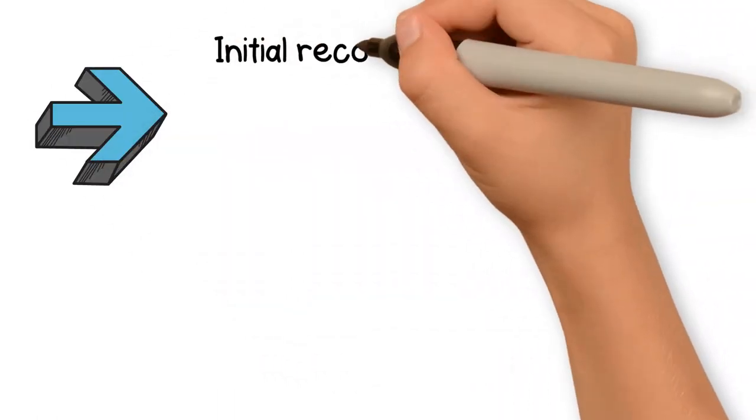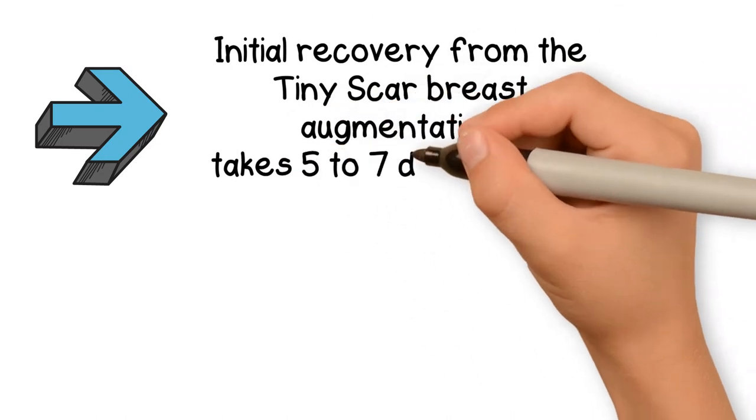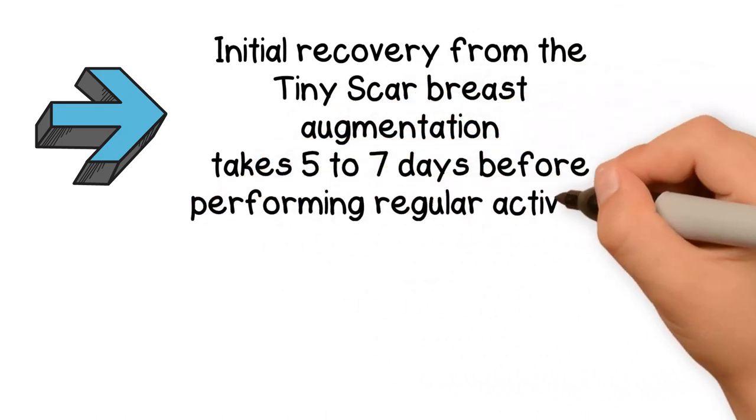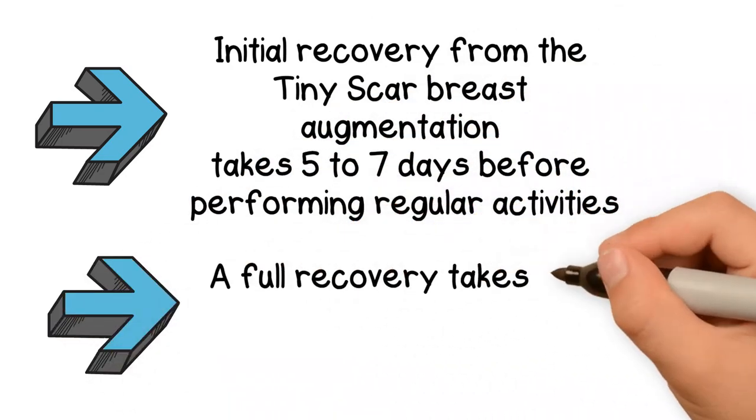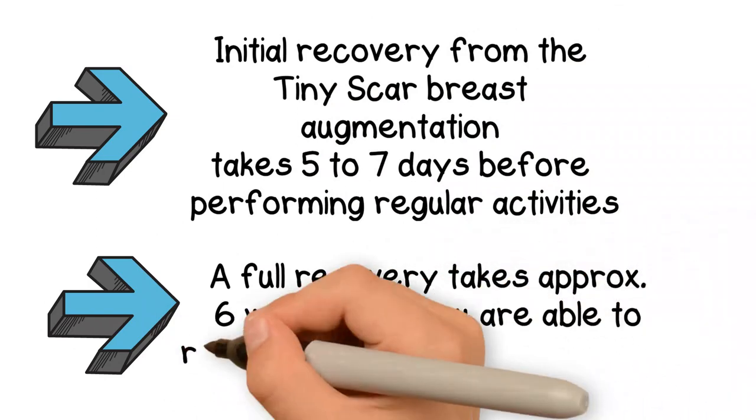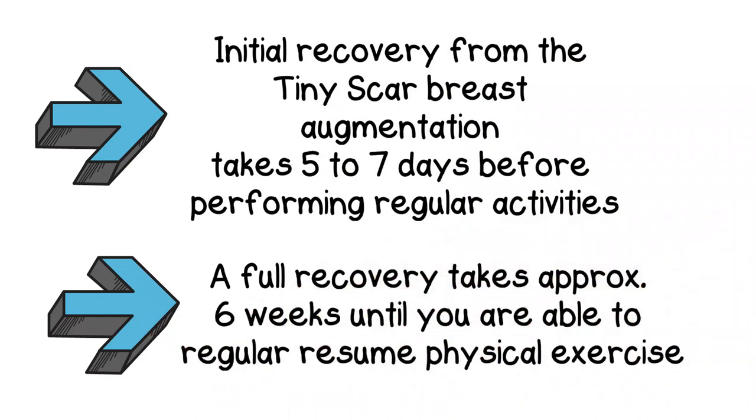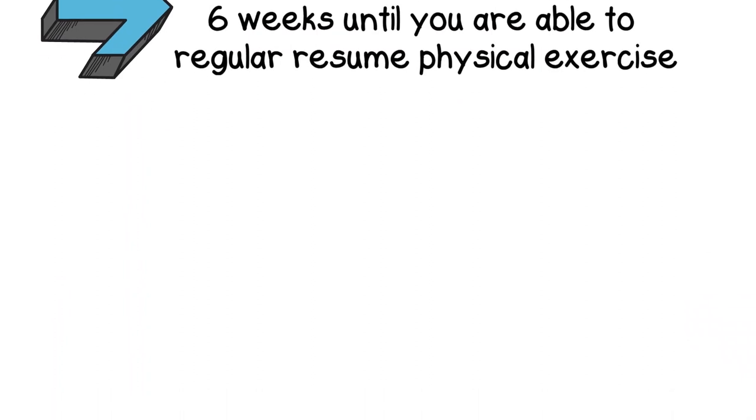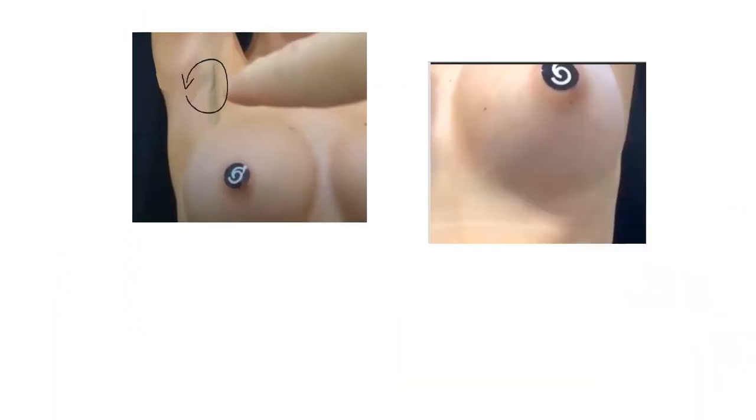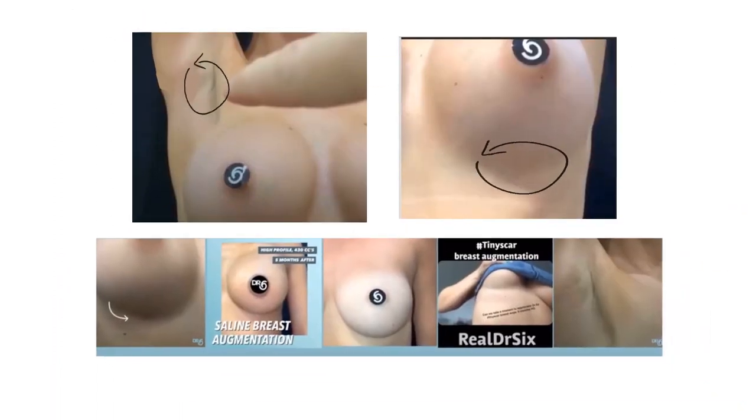Initial recovery from the tiny scar breast augmentation takes 5 to 7 days before performing regular activities. A full recovery takes approximately 6 weeks until you're able to resume regular physical exercise. After several months, the implants will have settled and the scars will be very fine, white-lined, barely visible to the naked eye.